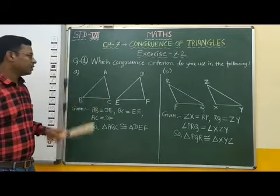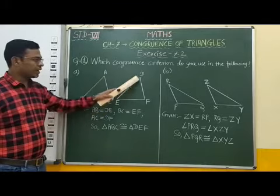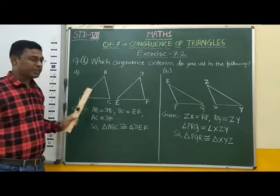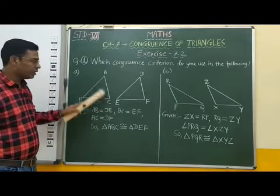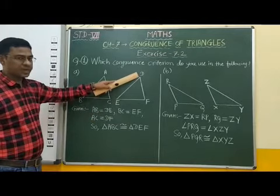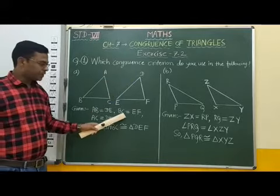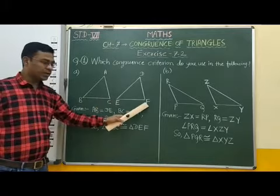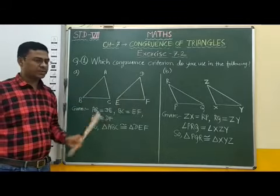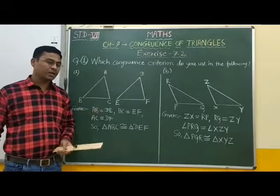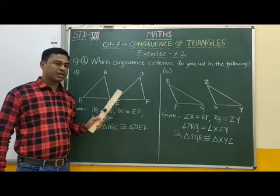First question: two congruent triangles are given — triangle ABC and triangle DEF. Between these two congruent triangles, the equal parts are: AB is equal to DE, BC is equal to EF, and AC is equal to DF. Therefore, students, we observe here that three sides of one triangle are equal to the corresponding three sides of another triangle.